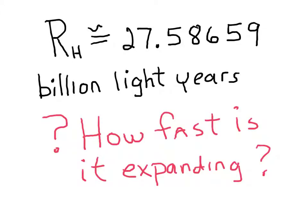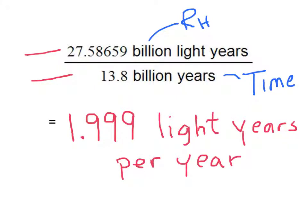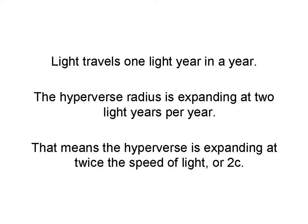So how fast is it expanding? To see how fast the hyperverse is expanding, we will divide the radius of the hyperverse by the age or time that it has been expanding. And the result is 1.999 light years per year. Light travels one light year in a year. The hyperverse radius is expanding at two light years per year. That means the hyperverse is expanding at twice the speed of light, or 2c.